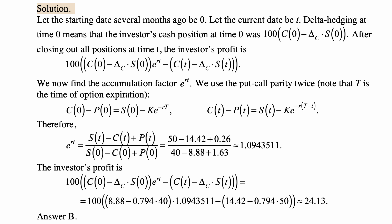Then the investor's profit is the expression that we had here with e^(rt) substituted by the value that we just calculated for it. Everything else is given in the problem, so we just plug them in. We get 24.13, which is answer B.